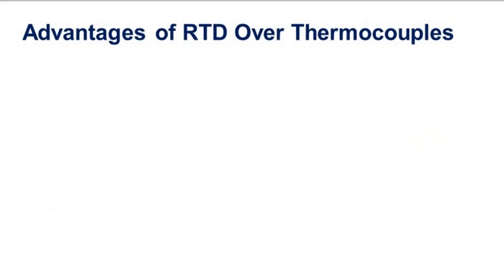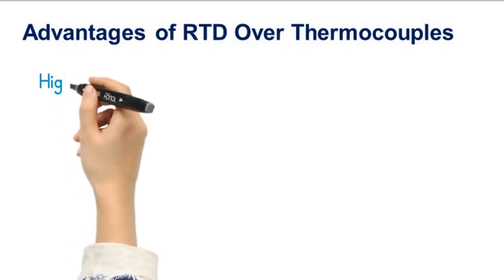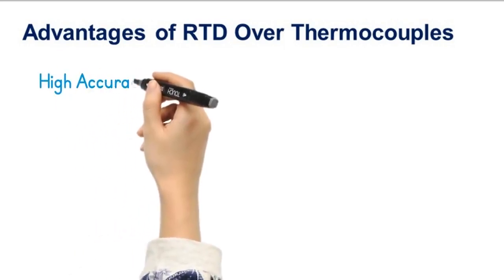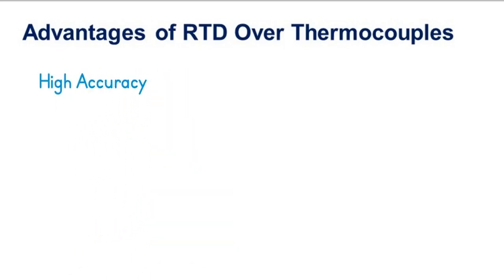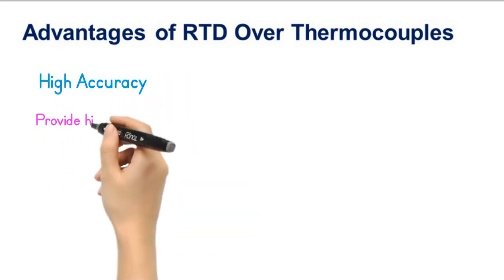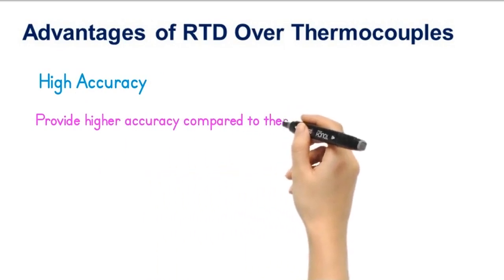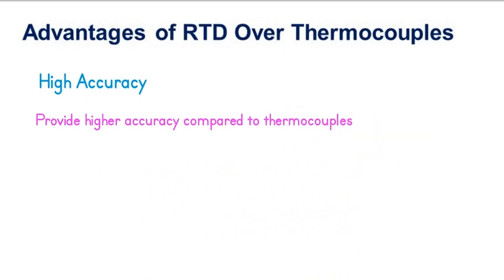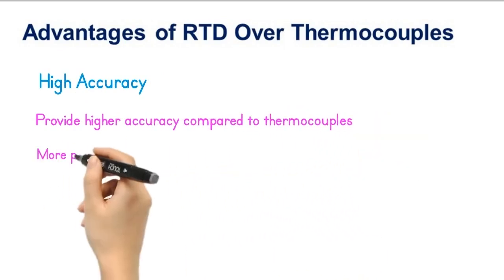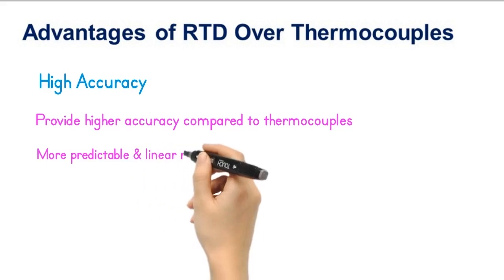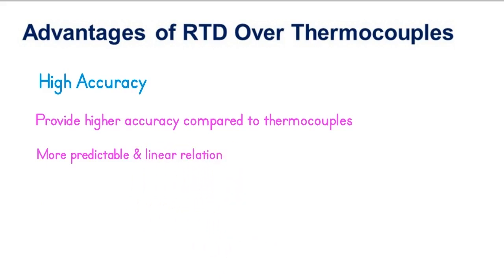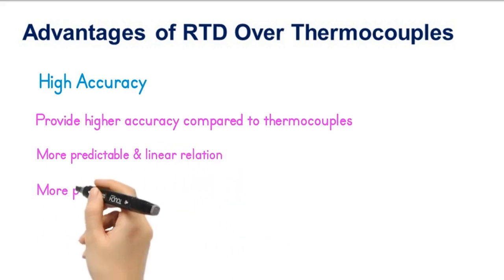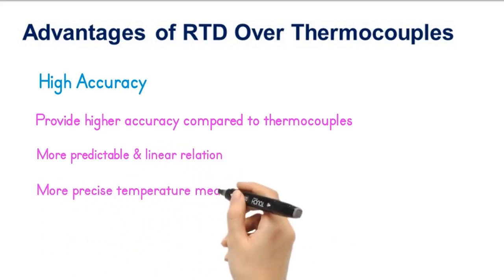RTDs offer several advantages over thermocouples. High accuracy: RTDs generally provide higher accuracy compared to thermocouples. They have a more predictable and linear resistance-temperature relationship, which allows for more precise temperature measurements.